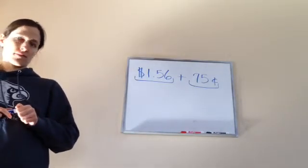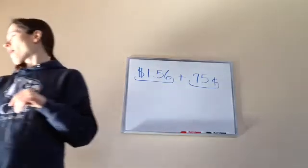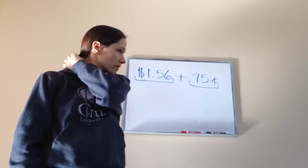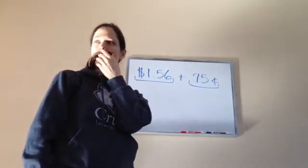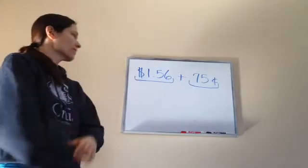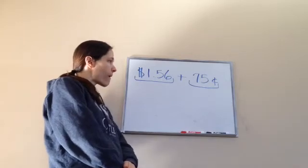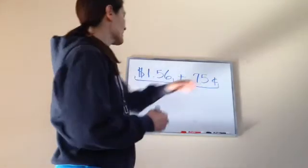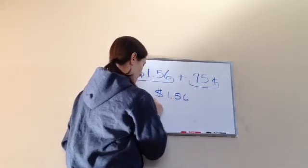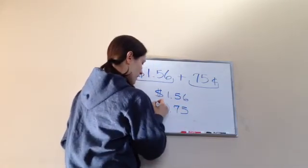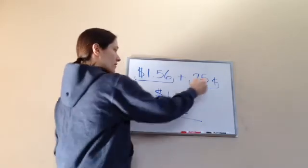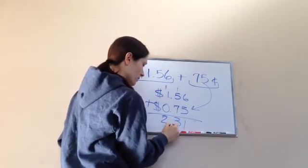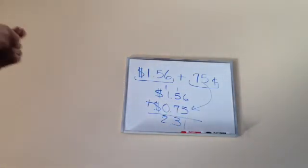Two dollars and 31 cents. Excellent job. So once you added this and you lined it up, here's what it should look like on your paper. Is that what you did, Eli? Mm-hmm. So we made that into that. And then you should have gotten two dollars. Bring my decimal down and 31 cents. Don't you go? Excellent job. Last lesson to 70.